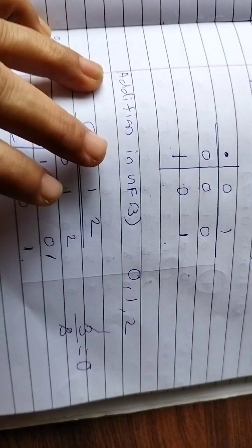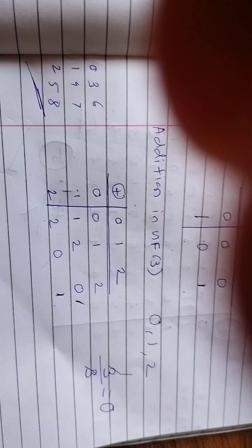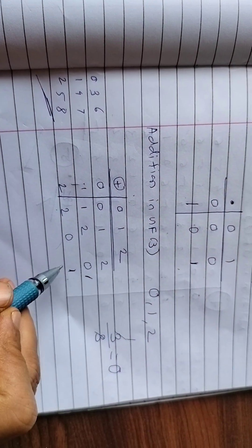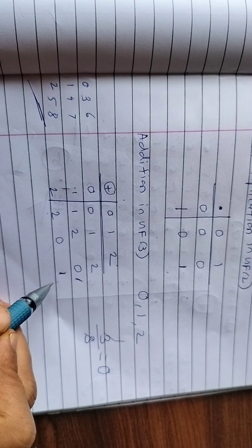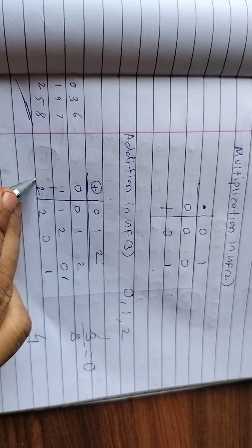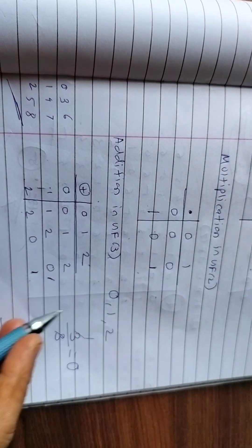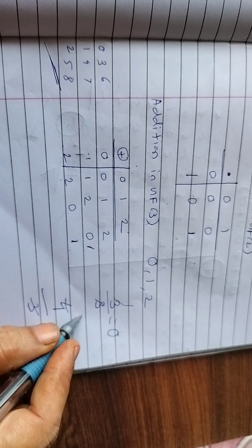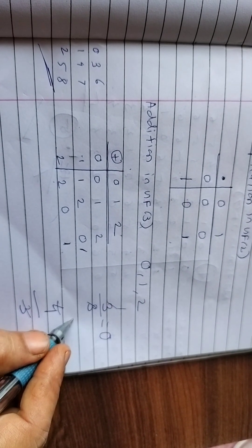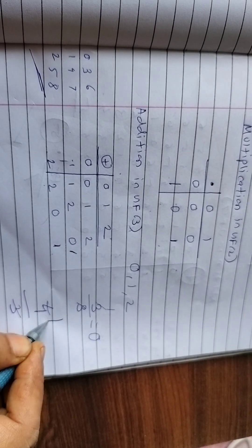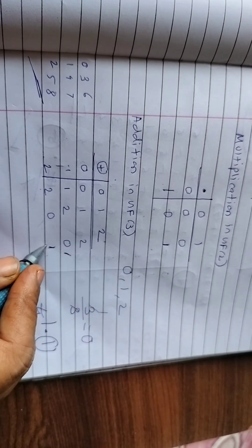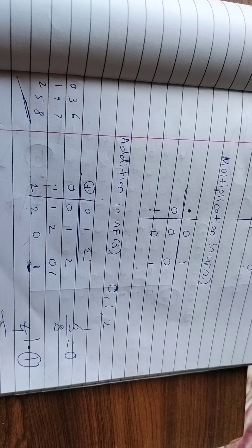Continuing GF(3) addition: 2+0=2, 2+1=3 which means 0, 2+2=4 which means 1. There is also a second method called the mod method. For example, 2+2=4; divide 4 by 3 (the Galois field size): 3 goes once into 4 with remainder 1. The remainder is your answer. So 2+2=1 in GF(3).